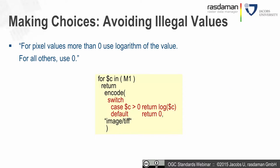Another switch use case: sometimes we have illegal values in functions, like dividing by zero or log of a negative value. With a switch statement we can capture these cases and return something meaningful. For example, for pixel values exceeding 0 we get the log, and for all others we return 0. So: case $c greater than 0, return log($c); otherwise return 0. The whole thing is again embedded into a TIFF file.